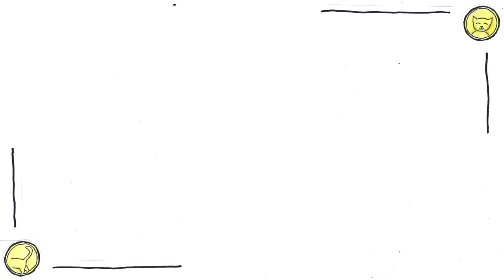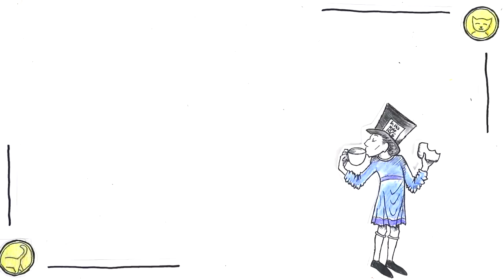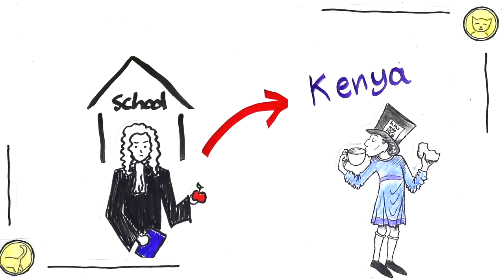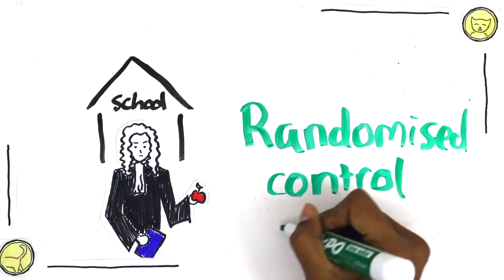let me tell you a story about how powerful the scientific method can be. In the late 90s, the Harvard professor Michael Kramer was interested in improving education in Kenya. Instead of starting an education non-profit like you might expect, he decided to do a series of randomized control trials.